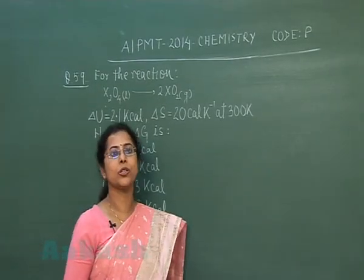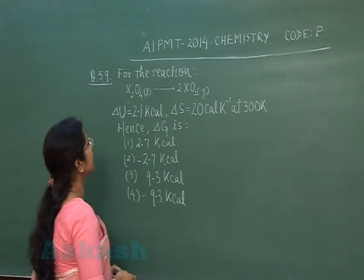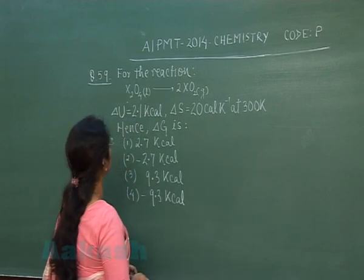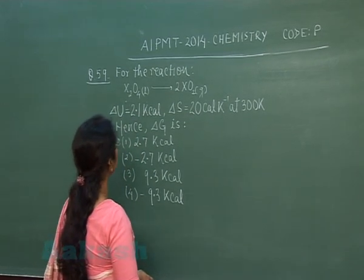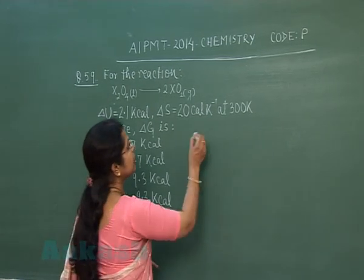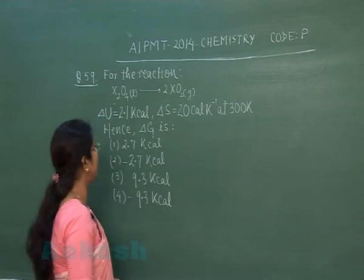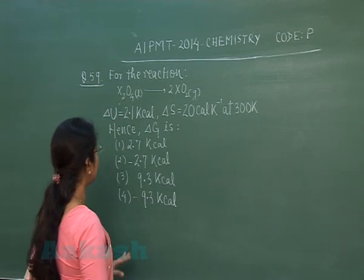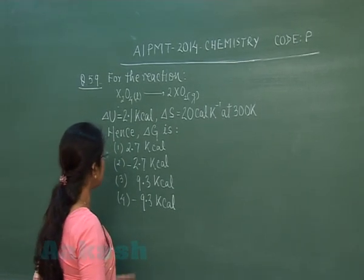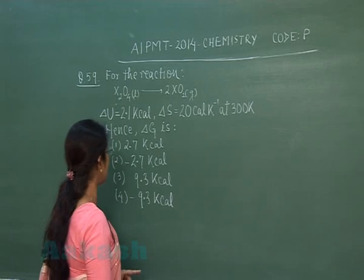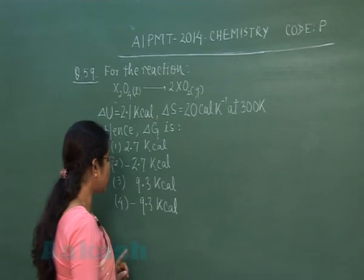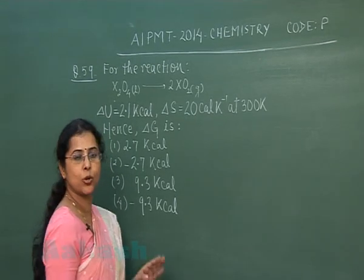Our next question is question number 59. For the reaction X₂O₄ (liquid) → 2XO₂ (gaseous), ΔU is 2.1 kilocalories, ΔS is 20 calorie per Kelvin at 300 Kelvin. Hence ΔG is: first option 2.7 kilocalories, second option −2.7 kilocalories, third option 9.3 kilocalories, and fourth option −9.3 kilocalories.